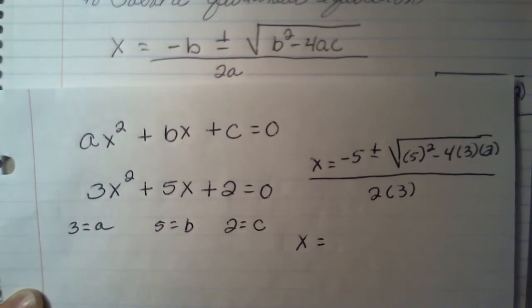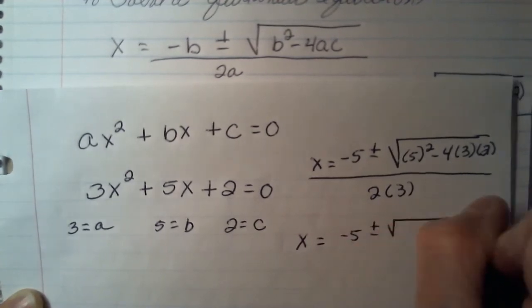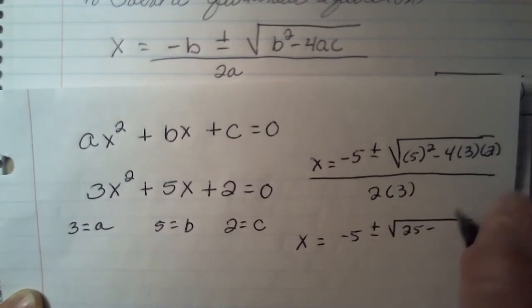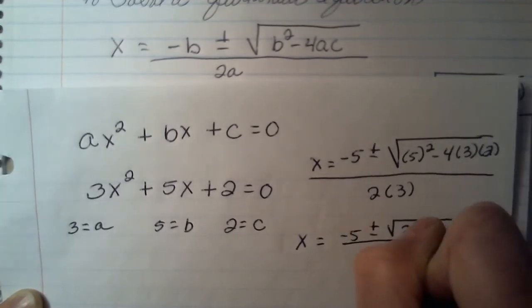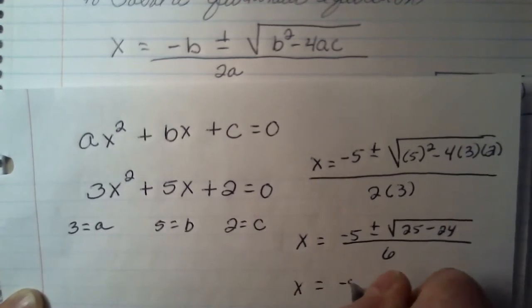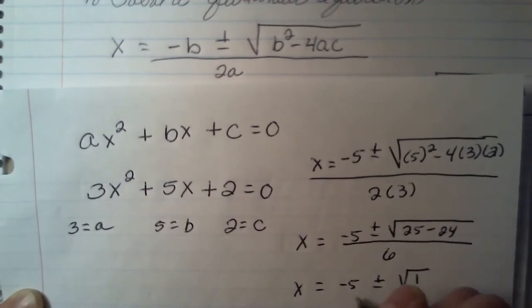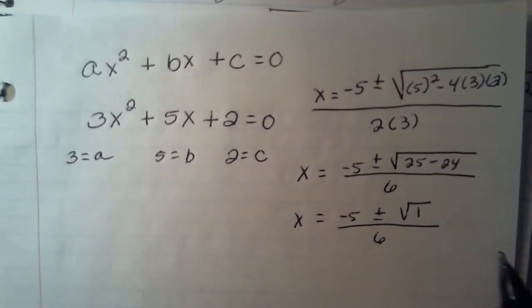Now that I've plugged in my values, I simply have to do my arithmetic. 5 squared equals 25, 4 times 3 times 2 equals 24, all divided by 6. Continue to do my arithmetic. 25 minus 24 is 1. And the square root of 1 simply is 1.